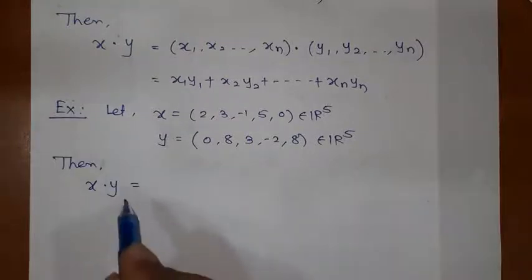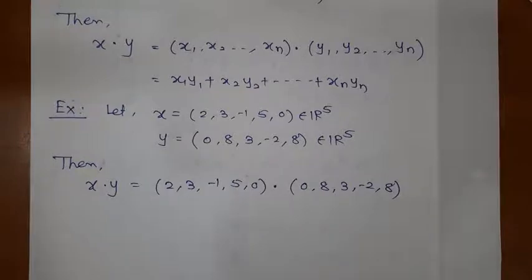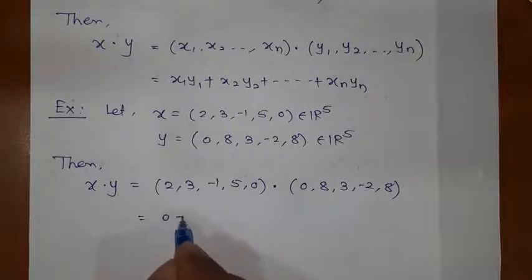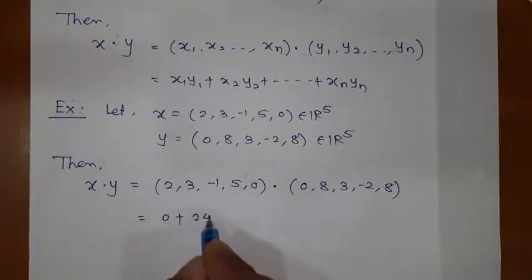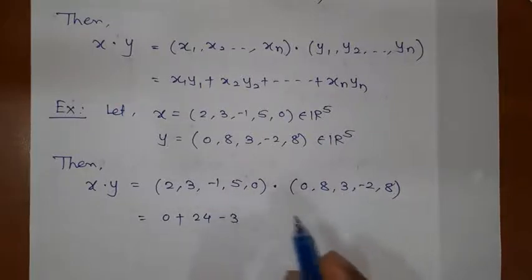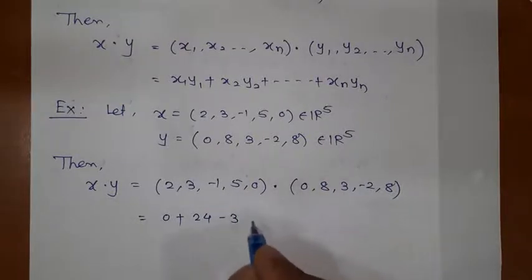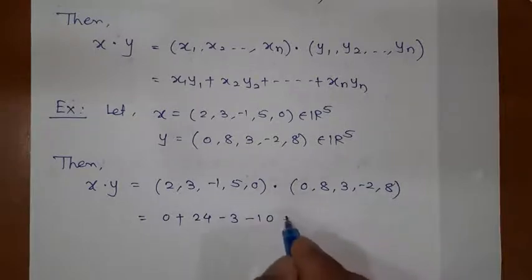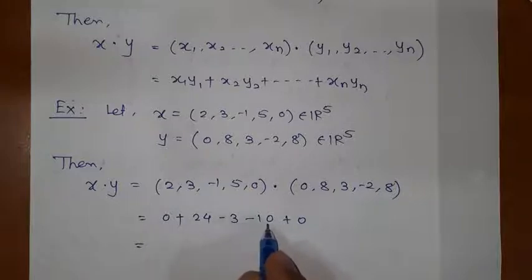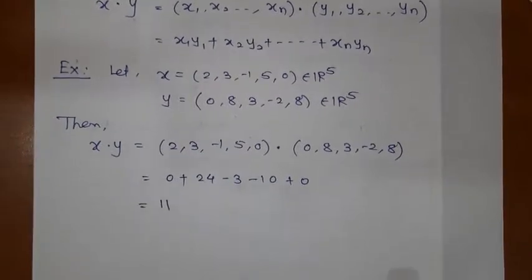Will you tell me what will be the inner product? Simply, what we have to do is first into first: 2 into 0 is 0; 3 into 8 is 24; minus 1 into 3 is minus 3; 5 into minus 2 is minus 10; and 0 into 8 is 0. So 24 minus 3 minus 10 gives us 11. So the inner product of X and Y is 11. In this way we calculate.